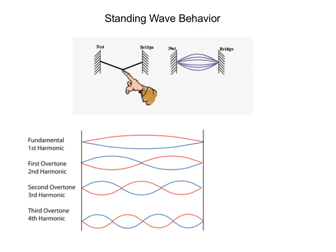Here's an example: somebody plucks the string on a guitar. Once you let it go, the wave travels forward and then reflects back and forth, creating a standing wave. If you strum a guitar and look at it, you don't see the wave traveling back and forth — you see the standing wave, the string moving back and forth. That's the example of a standing wave.